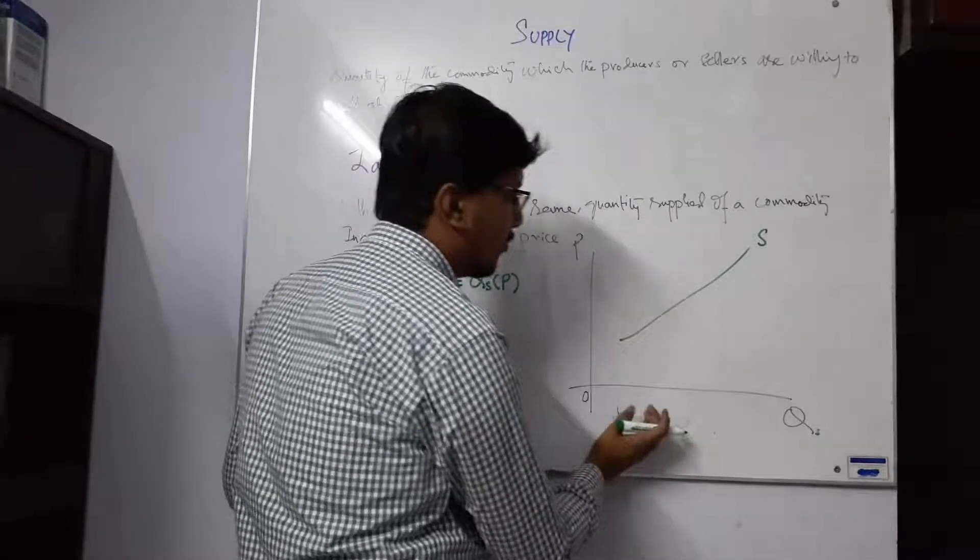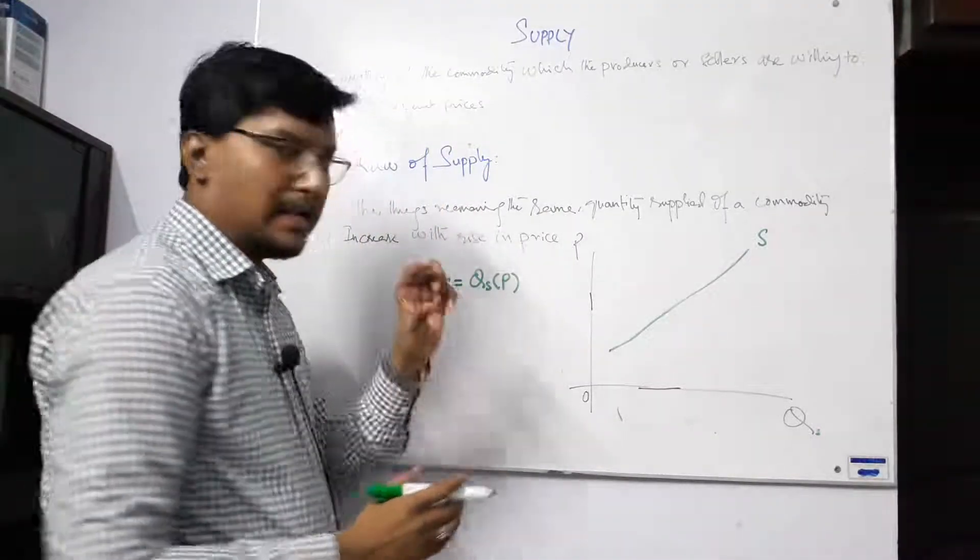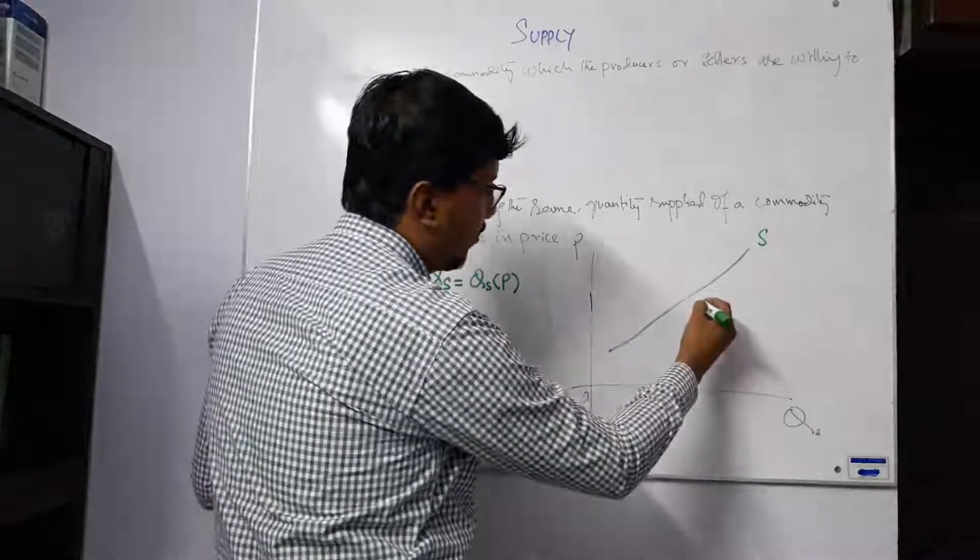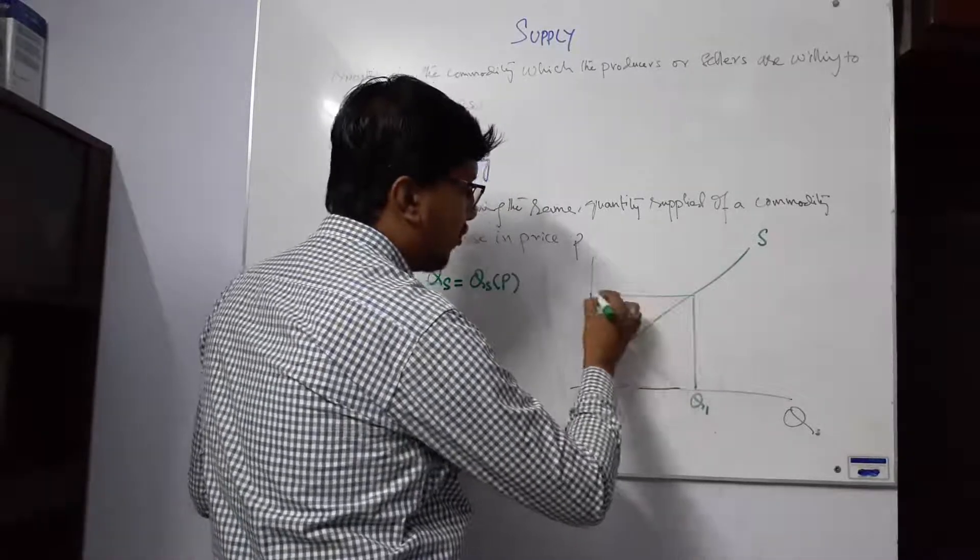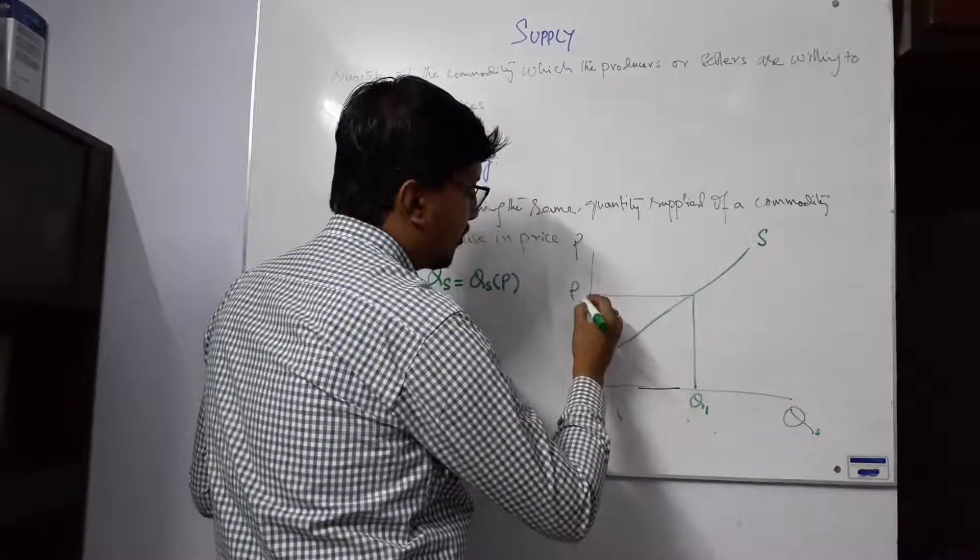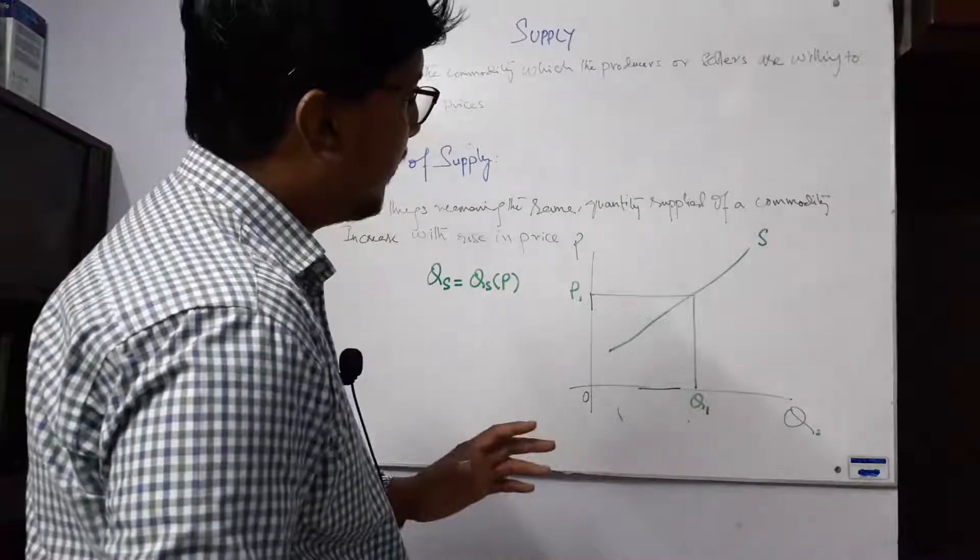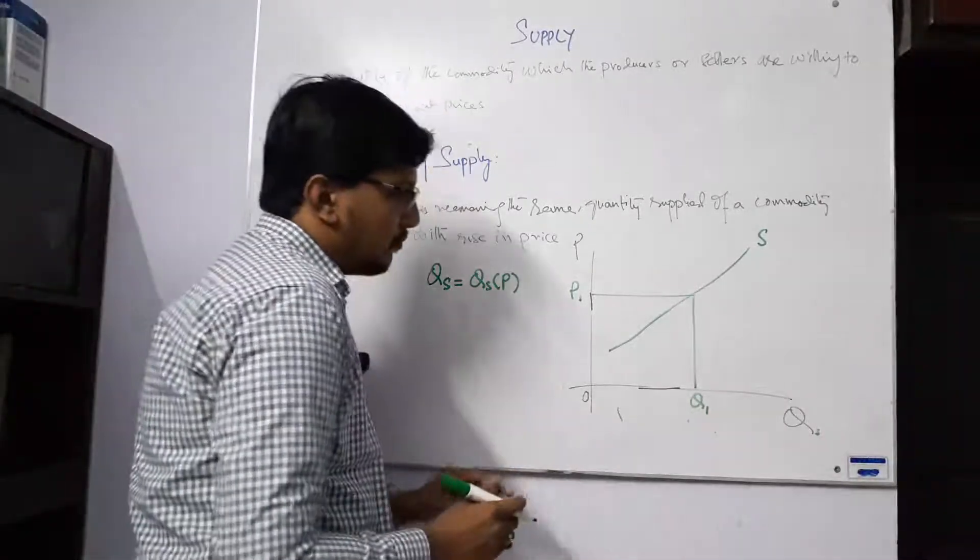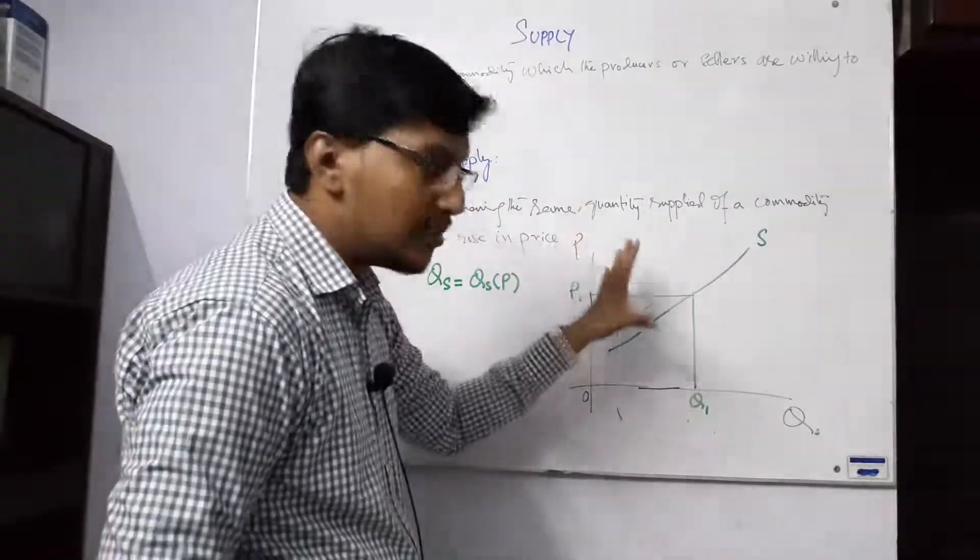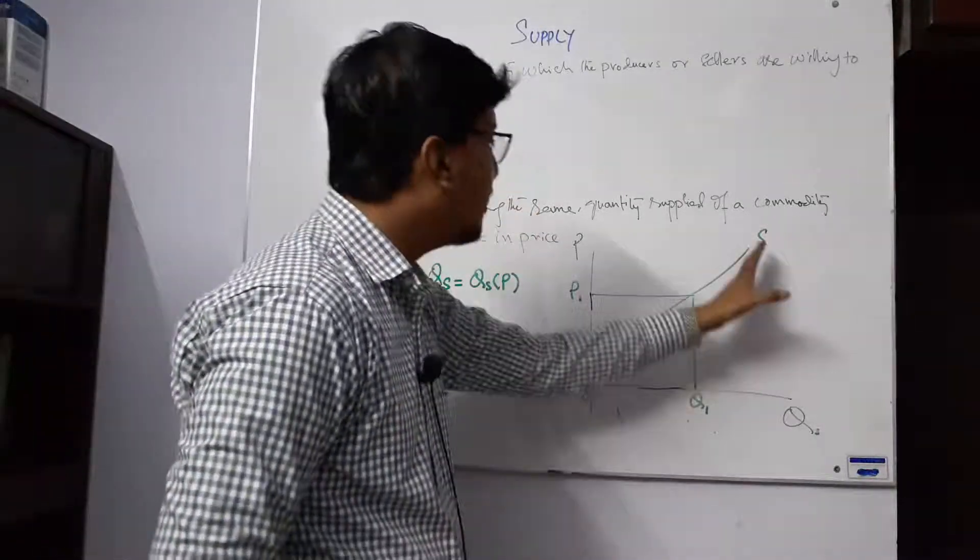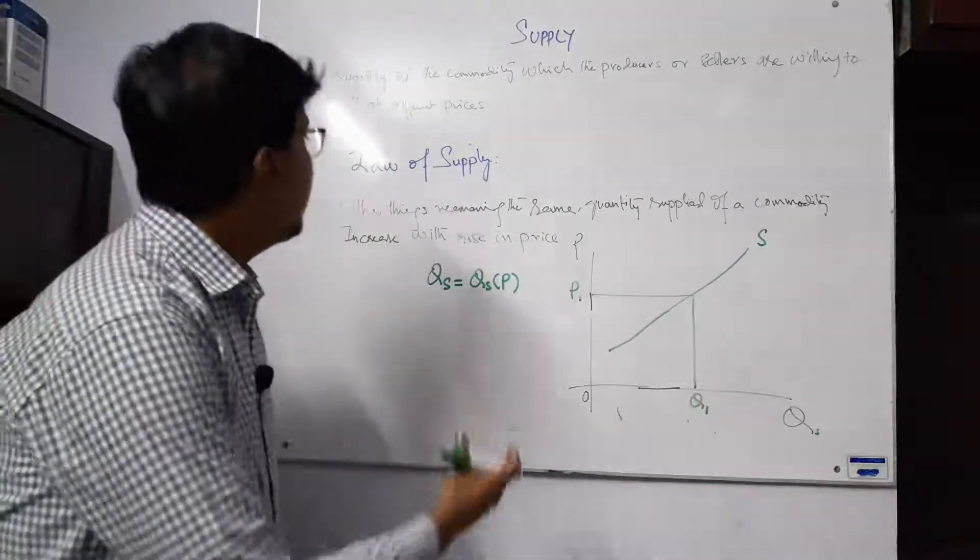Now we will see a specific point. How can we interpret this? A specific point means Q1 is supplied to the consumer at price P1. But how do we understand this? We are talking about if Q2 is wanted, that means it will be at a higher price. Q2 is supplied to the market, price will increase. Q3 is wanted to market, price will increase. So this is the total relationship, and this is the law of supply.